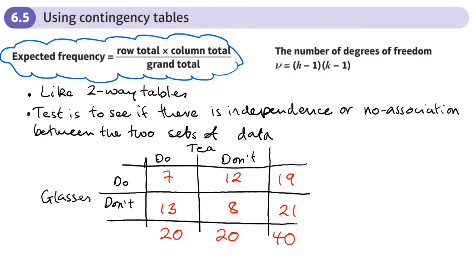The expected frequency is the row total times the column total divided by the grand total. For example, in this cell here, if I wanted to work out the expected frequency: the row total is 19, the column total is 20, divided by the grand total of 40. So that's 19 times 20 divided by 40, which gives 9.5.